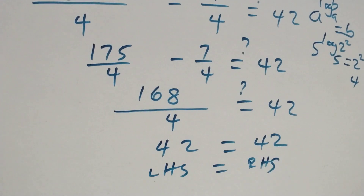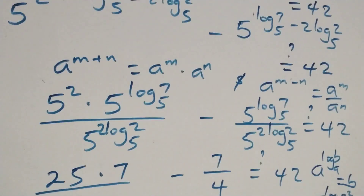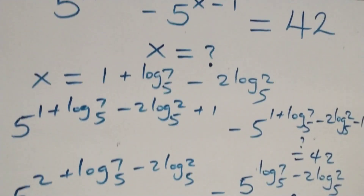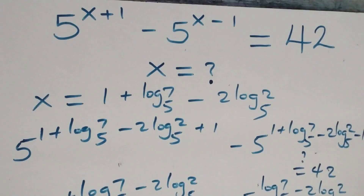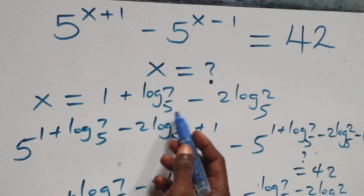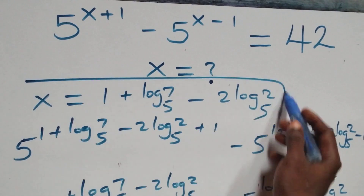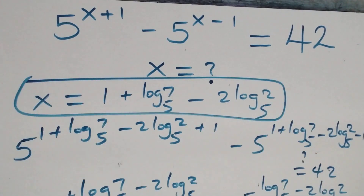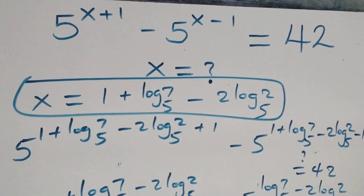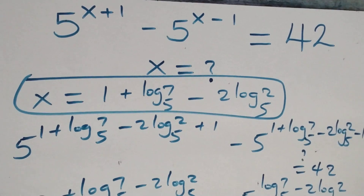Therefore we conclude that x equals to 1 plus log 7 base 5 minus 2 log 2 base 5 satisfies this given problem. Thank you for watching — don't forget to subscribe for more videos, turn on the notification bell, share this video, give it a thumbs up, and put your comments. See you next class, bye for now.